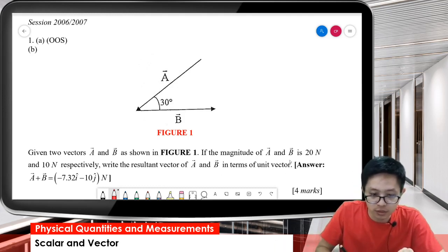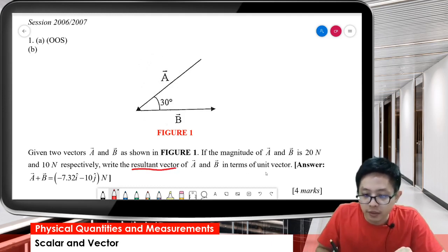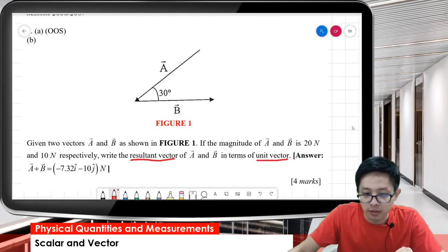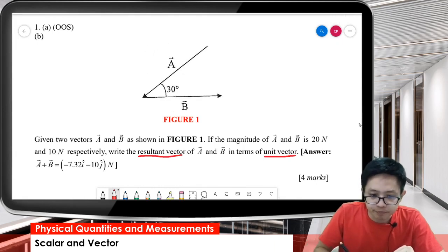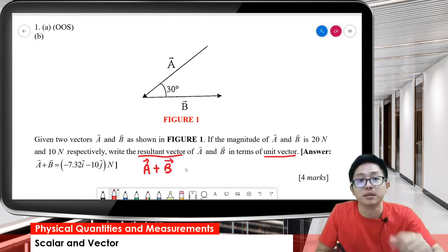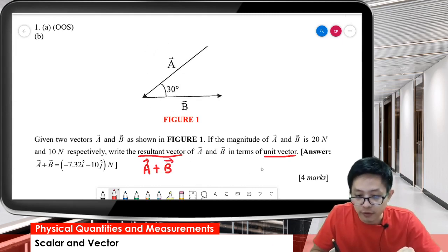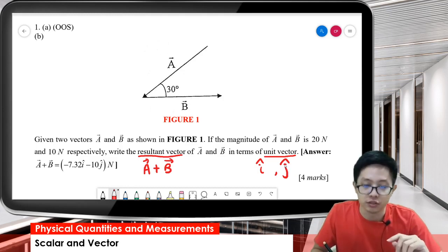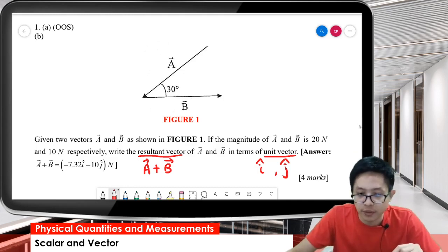The question wants us to find the resultant vector in the form of unit vector. Resultant vector means A plus B. Unit vector means in the form of i and j, that means i and j unit vectors.